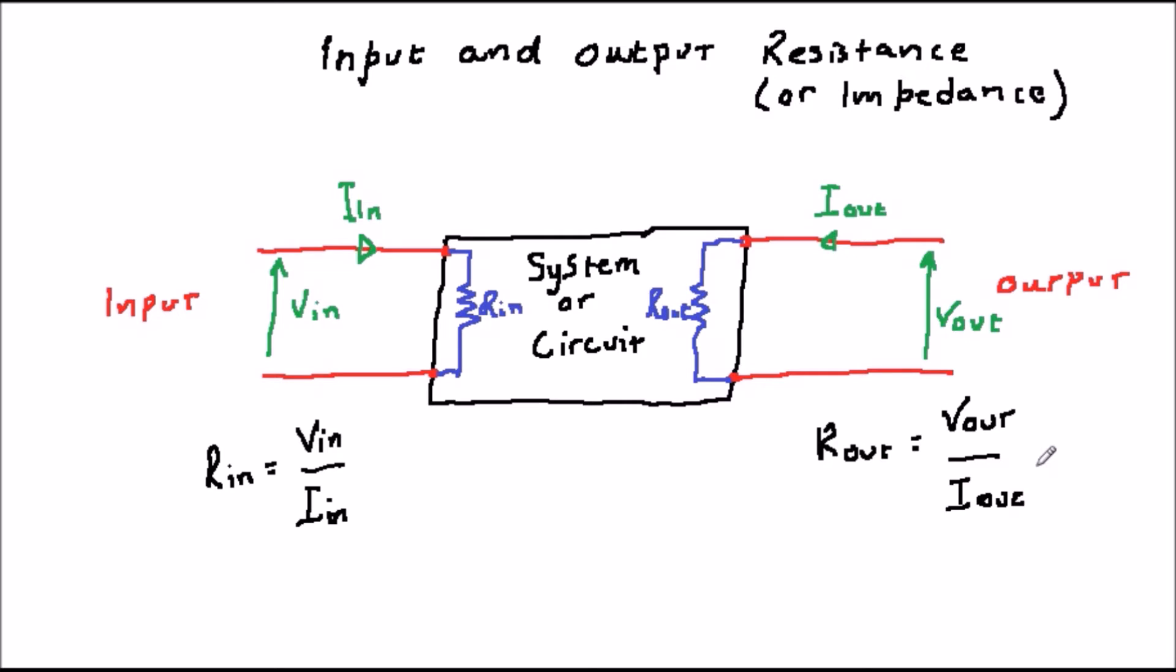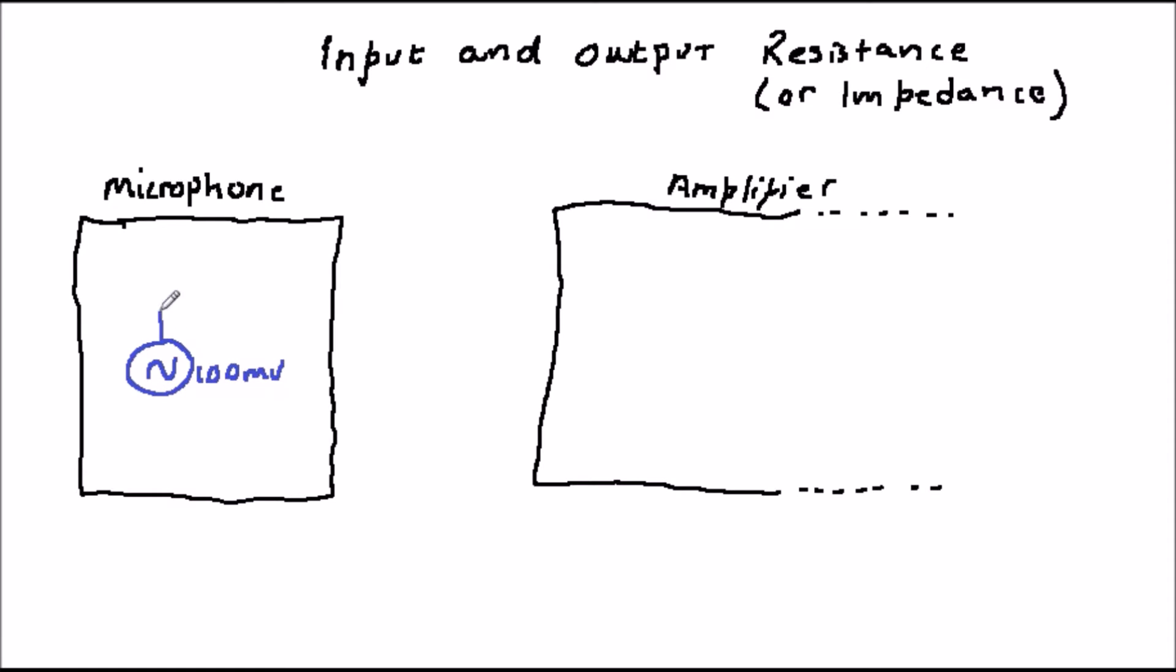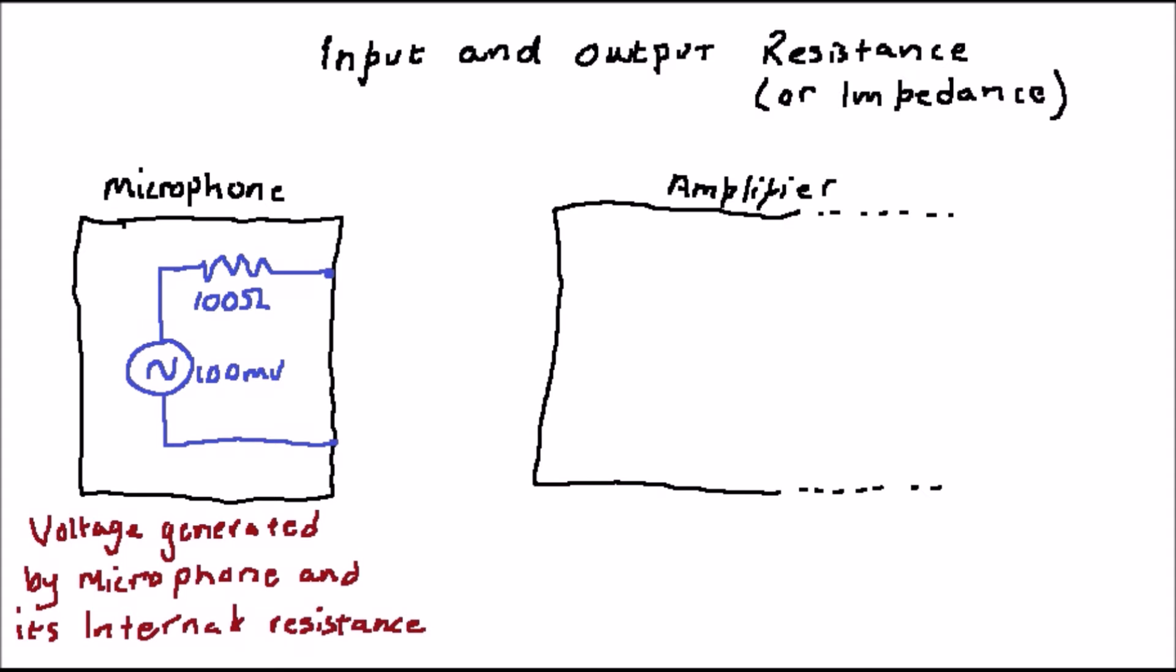These parameters have a significant effect on what happens when we connect circuits together. For example, suppose we have a microphone which has an output resistance of 100 ohms connected to an amplifier which has an input resistance of 500 ohms. And the microphone generates 100 millivolts.